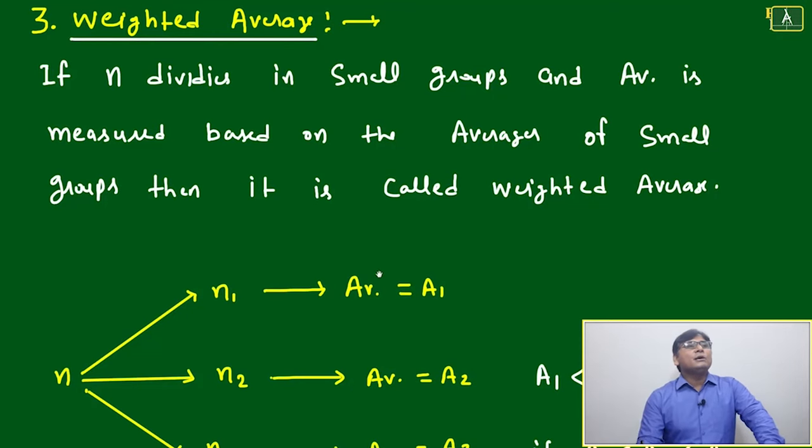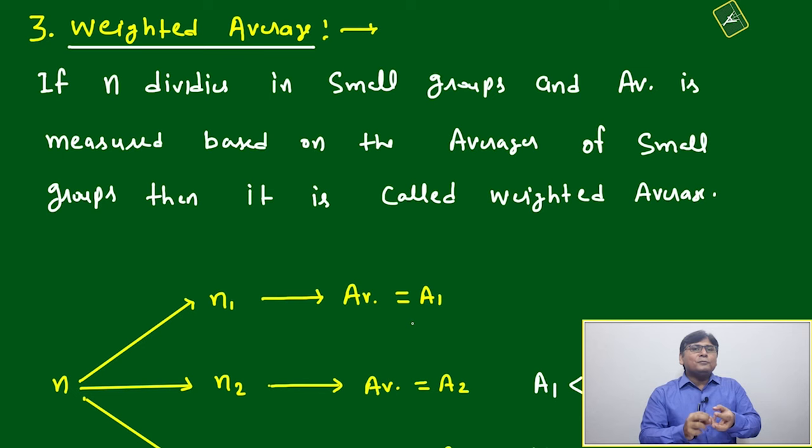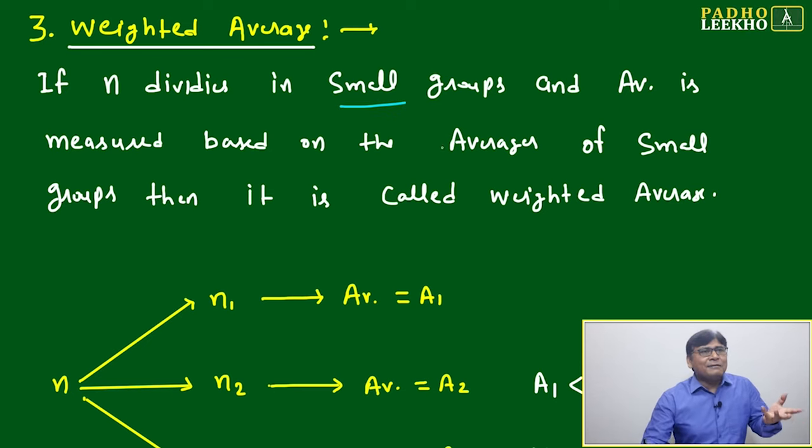Now we'll come to the next concept: weighted average. What is weighted average? If one group splits into a variety of groups or number of groups, and every group is defined based on different averages, then how do we find the average of the combination of all these small groups? If n divides into small groups and the average is measured based on the averages of small groups individually, then it is called weighted average.